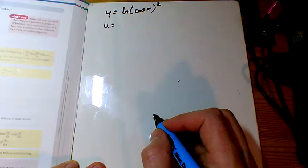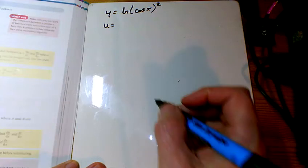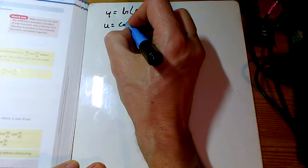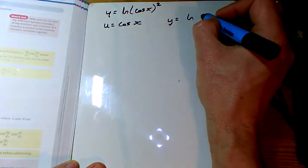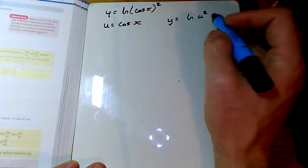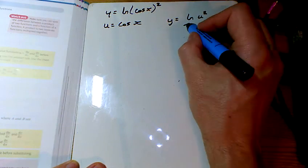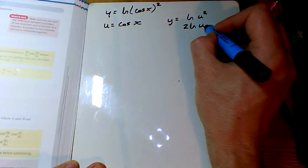Another question, 11c. We've got ln(cos x)² so let's let u equal cos x. That then gives us y equals ln(u²). Before we plough about with that, let's just remember that's the same as 2 ln u.